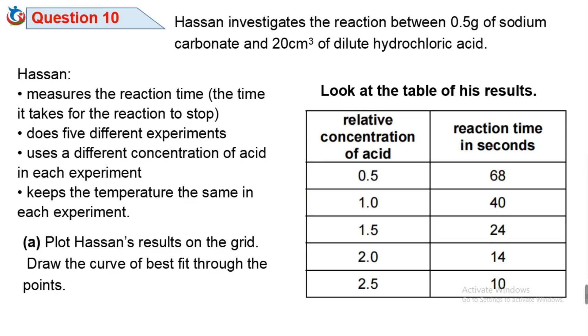Question 10. Azen investigates the reaction between 0.5 gram of sodium carbonate and 20 cm cube of diluted hydrochloric acid. Azen measures the reaction time, the time it takes for the reaction to stop. He did five different experiments.